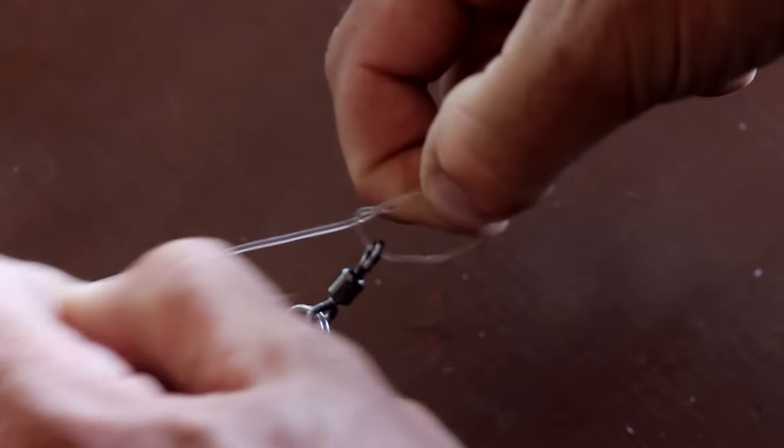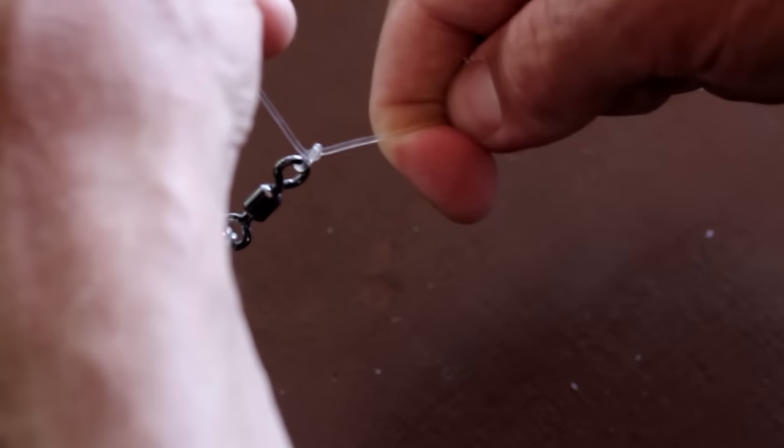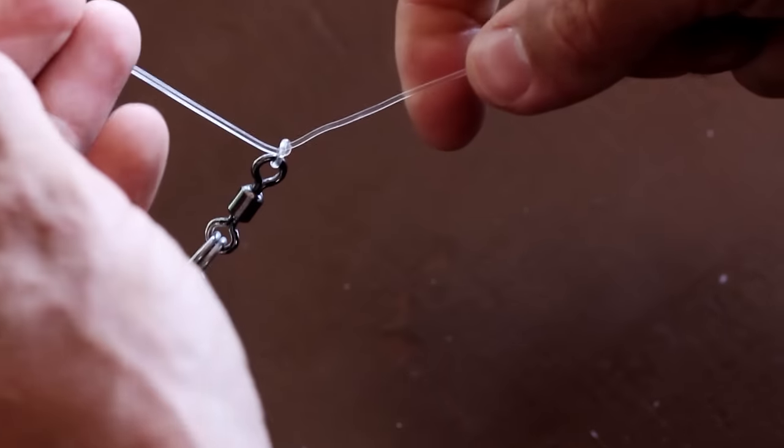The AG Chainknot is simply a series of alternating over and under half hitches around the leader.